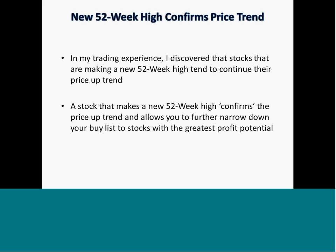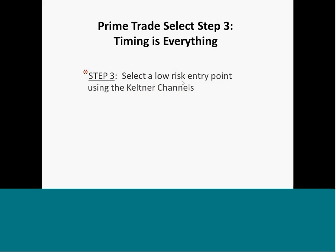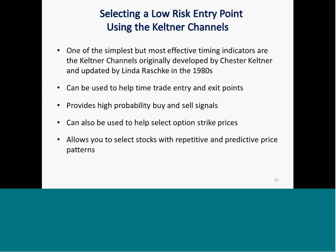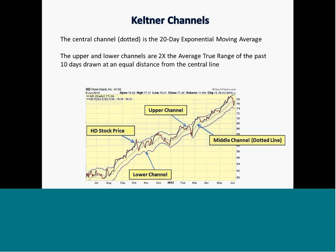Here's an example with Cigna — we can see the stock was making a series of new 52-week highs in this time frame. That, along with the up-sloping on-balance volume line, confirmed the price uptrend. The third step in Prime Trade Select is to select a low-risk entry point using the Keltner channels, which can help time your trade entry and exit points. They provide high-probability buy and sell signals and can also help you select the option strike price.